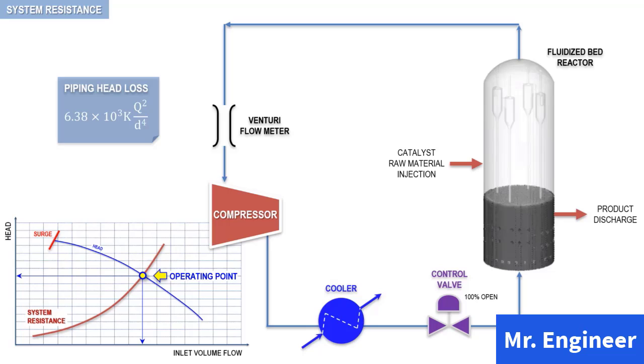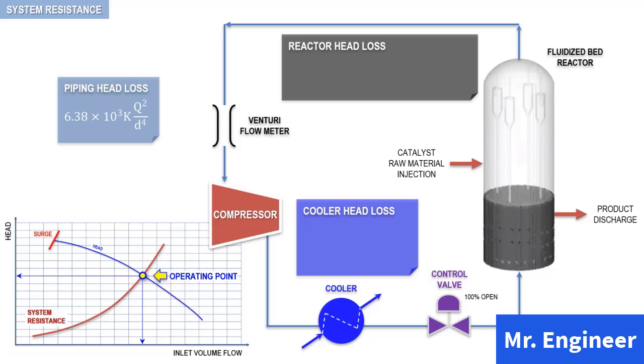In addition to the piping losses, we need to account for the system losses. These include the cooler head loss and the reactor head loss, which are described by the following two correlations. Notice how both of them are volume flow and gas density dependent. In addition, the reactor head loss is also sensitive to the bed weight, referred to here as BW. This actually makes sense, because a heavier bed will oppose higher resistance to the compressor flow.